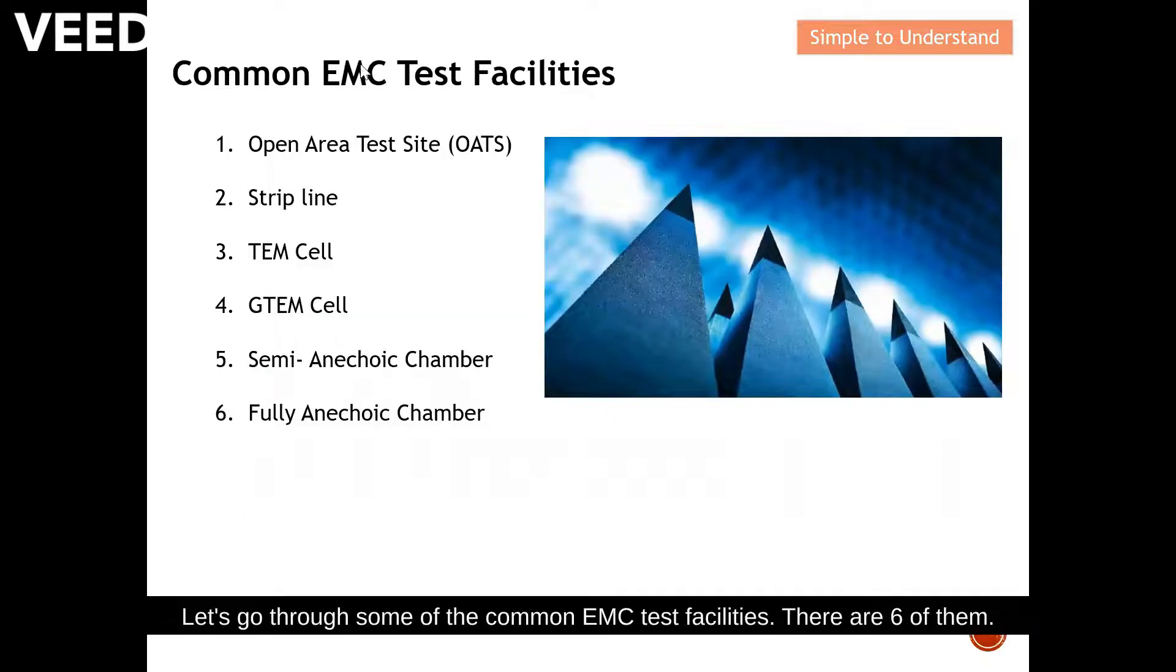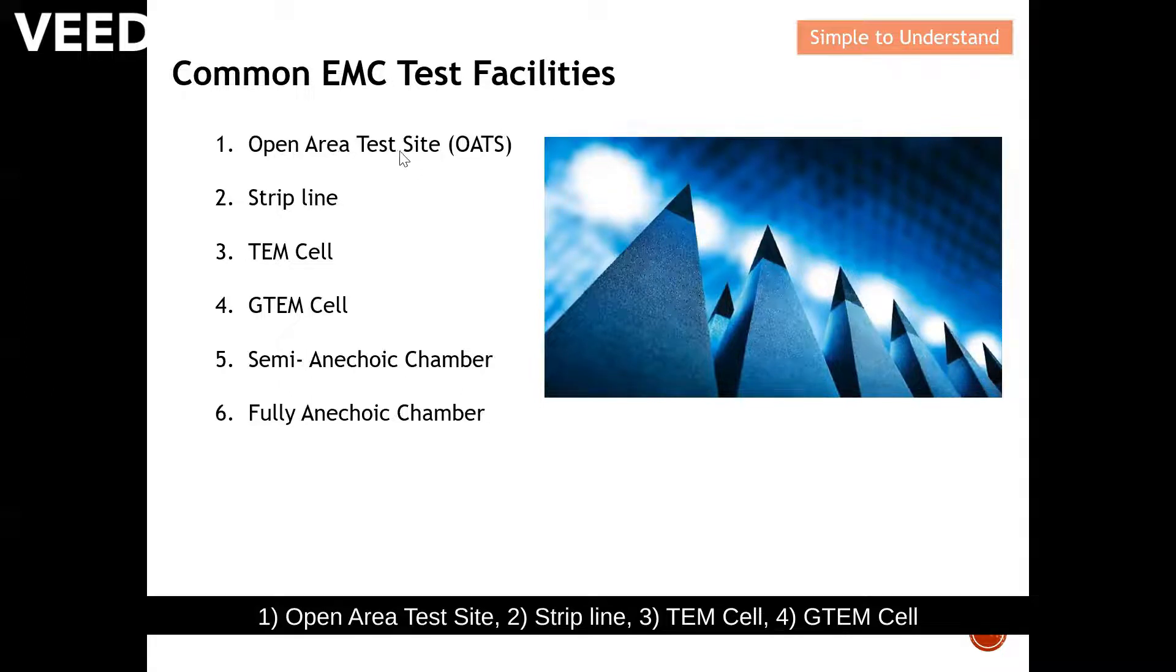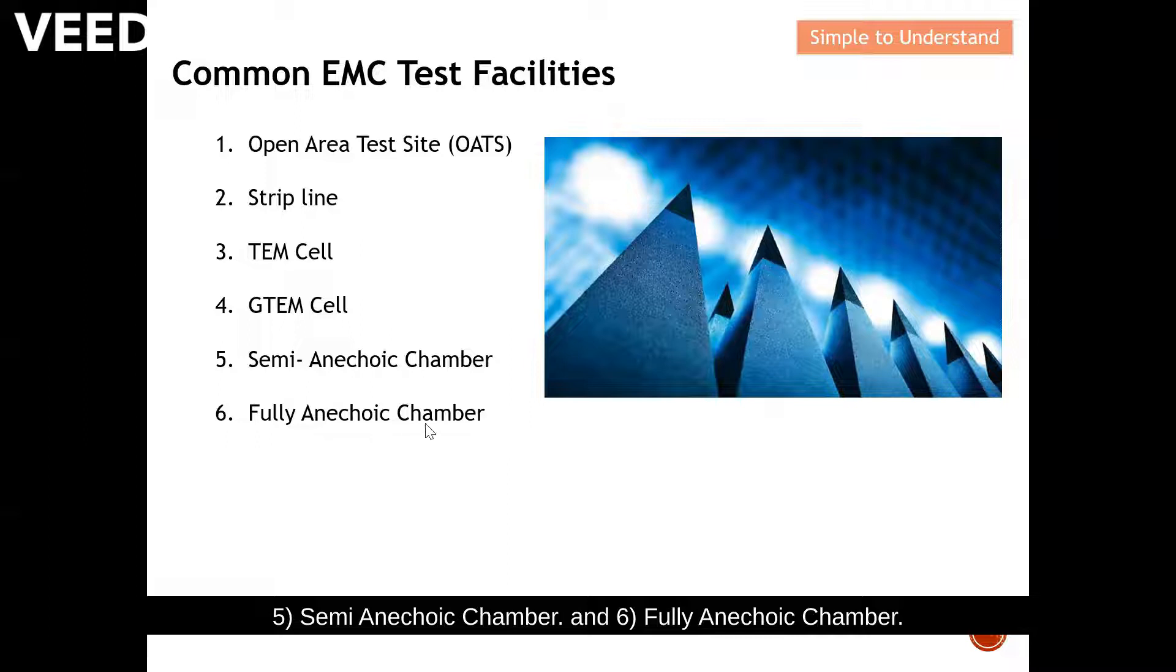Let's go through some of the common EMC test facilities. There are six of them: number one, open area test site; stripline; TEM cell; GTEM cell; semi anechoic chamber; and last but not least, fully anechoic chamber. Next slide I'm going to show you some pictures of all these six items.